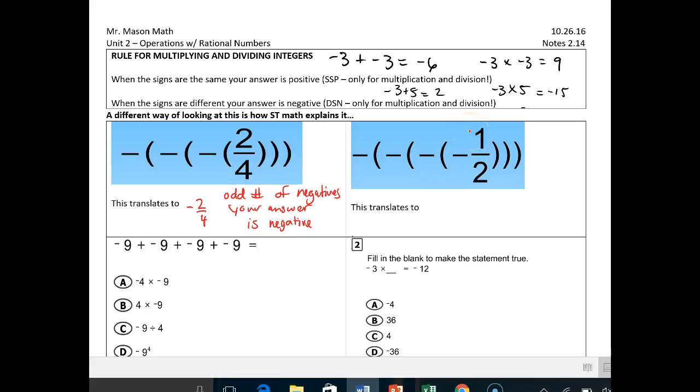So take negative, positive, negative, positive. So I translate to 1 half and that's if I have an even number of negatives, like 2, 4, 6, 8, or even 0. Even number of negatives, your answer is positive.